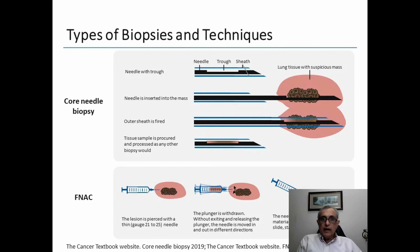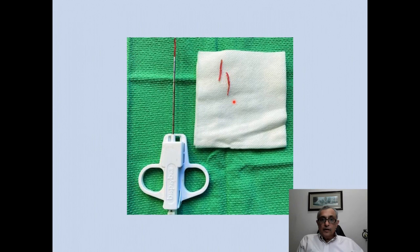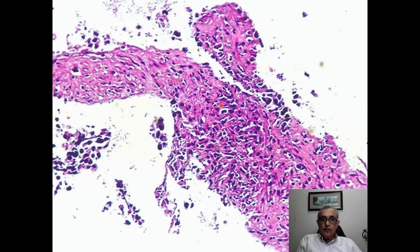There are generally two types of biopsies. One is the core needle biopsy, which has a trough allowing a significant amount of tissue to be obtained, compared to fine needle aspiration cytology which uses very fine needles to get cells. Core biopsy provides structural tissue samples, enabling diagnosis in some benign conditions where FNA is not able to do so.